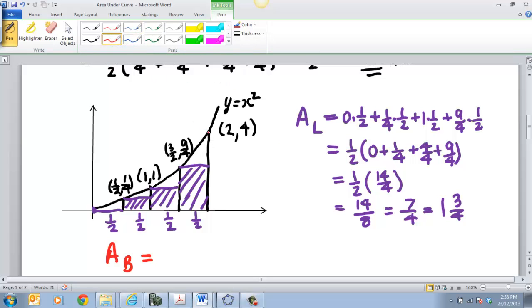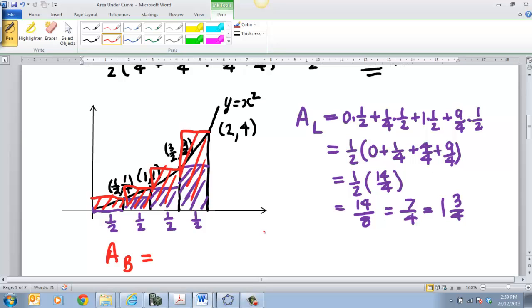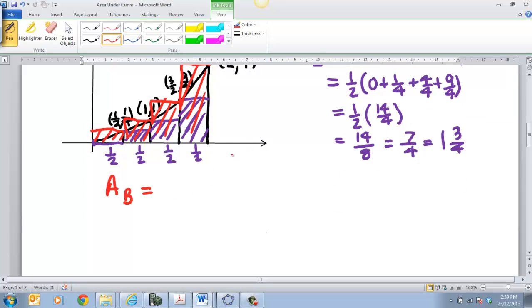To do my upper one, what I have to do is use my right-hand point. So I'll make this into my rectangle there, using my right-hand point. You can see it's going to be quite a big overestimate here. So if we use the same concept, it's simply going to be the height over there, which is going to be a quarter times by a half